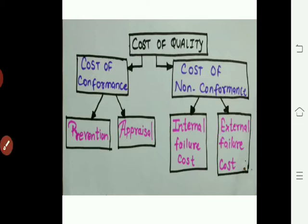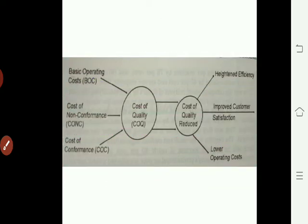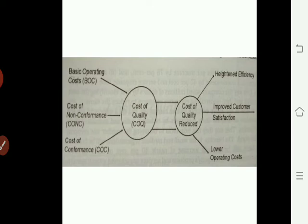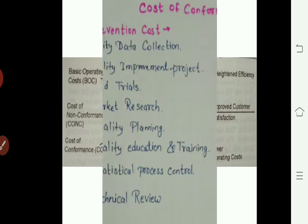If you talk about cost of quality — basic operating cost, cost of non-conformance, and cost of conformance — if you reduce these costs, you get very good efficiency and very good customer satisfaction. That's why Apple is Apple and a cheaper phone is just that. They give very good efficiency along with very good customer satisfaction. Lowering the operating cost gives you all these advantages.